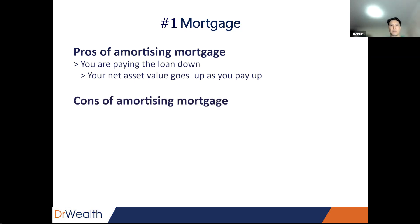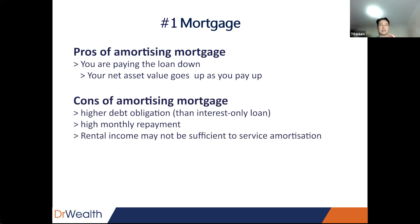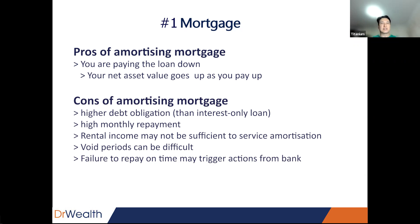The cons of an amortizing loan is that the debt obligation is much higher than an interest-only loan, so your monthly repayment is quite large and your rental income may not be enough to service the amortization. In times where there are void periods, it makes it even worse, and sometimes you may not be able to repay fully or even part of the obligation. Once you miss a payment or pay less than what you're supposed to, it triggers an alarm bell with the bank, and they will investigate and may ask you to top up.